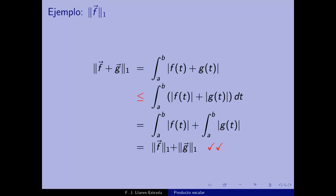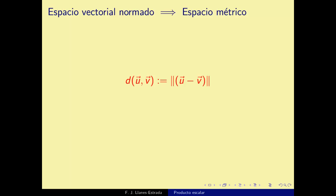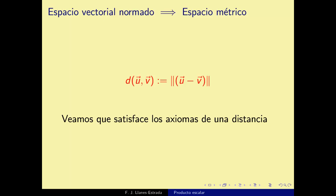Esta función del espacio de funciones a ℝ (técnicamente un funcional) es una norma. En general, cualquier espacio vectorial normado puede convertirse en un espacio métrico definiendo la distancia entre vectores como D(u,v) = ‖u−v‖. Es una estructura algebraica nueva: de dos vectores obtenemos un número real. Esta distancia inducida por la norma satisface automáticamente los axiomas métricos.